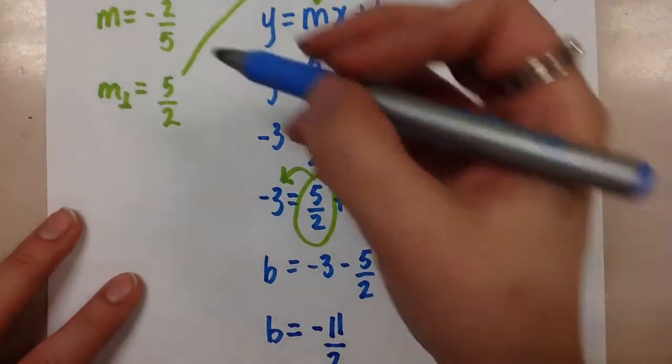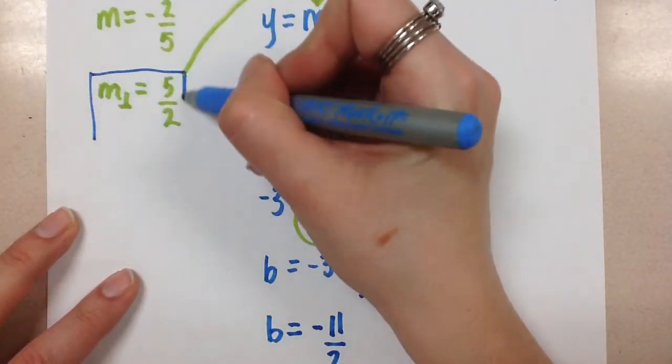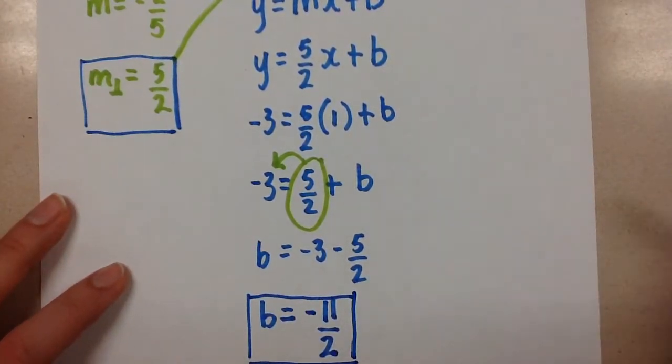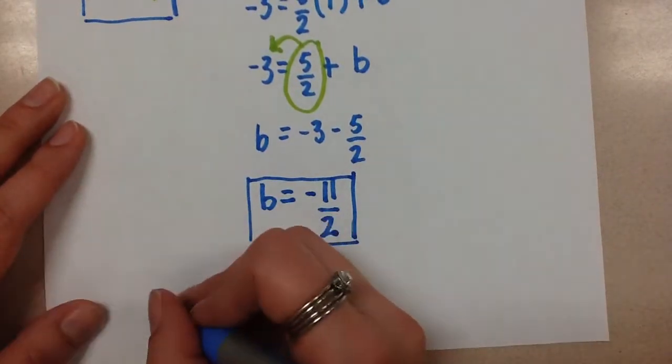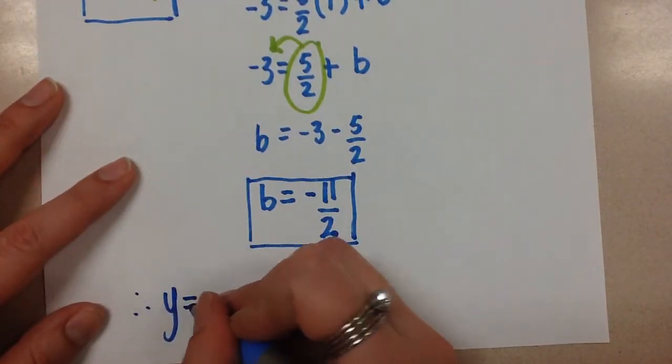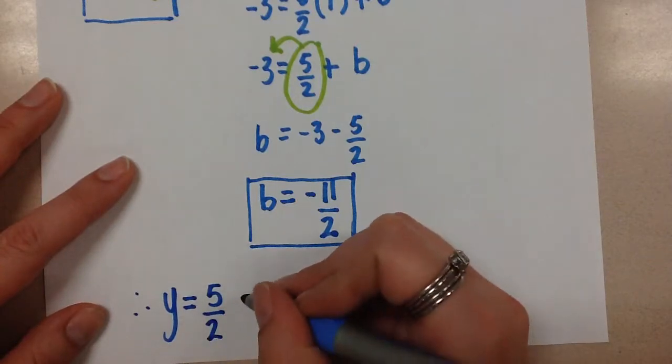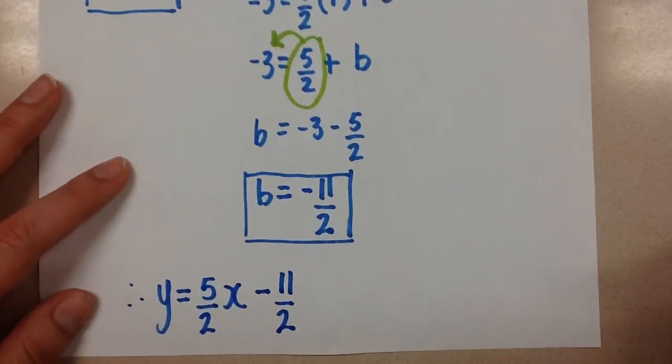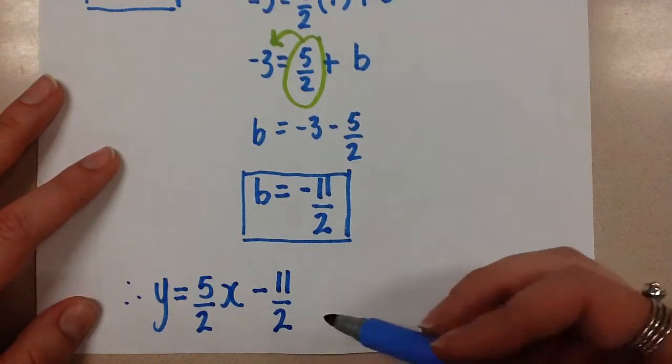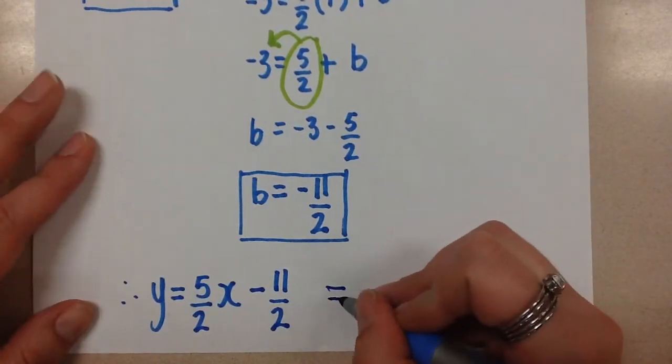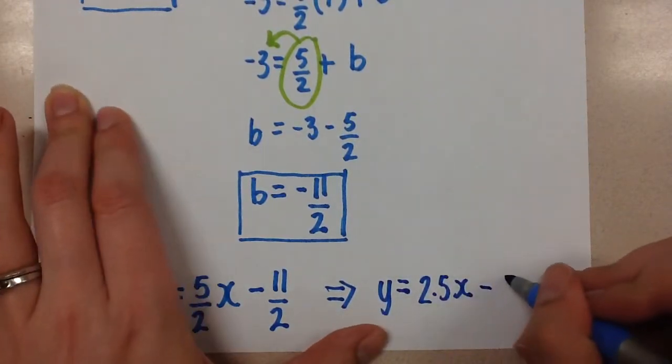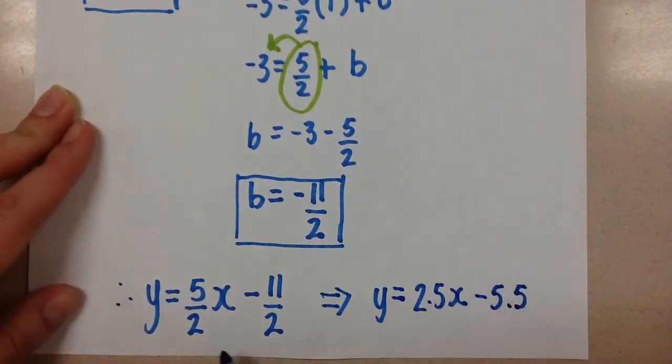So now we take the slope that we calculated here, that perpendicular slope, and the y-intercept that we just found here, and we plug them both into y equals mx plus b. And that gives us the final equation for this line. So y equals 5 over 2x minus 11 over 2. If you prefer decimals, I prefer the fractions as we know, but if you prefer to do this with decimals, we can, and then it would just be y equals 2.5x minus 5.5. And these are the same equation.